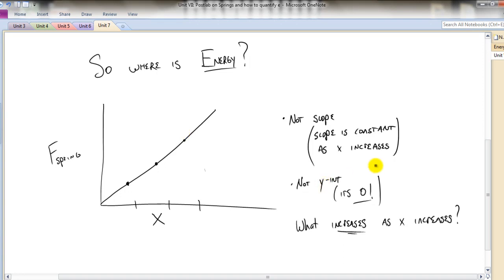We know it's not the y-intercept. So our main question is, what increases as x increases? And looking at this graph, you will notice one thing does increase as x increases - the area of the graph. So this area right here, as we go from here to here, notice how that area just increased.